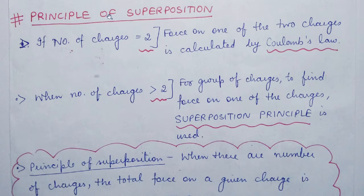when we have two charges, the force is calculated by Coulomb's law, which is F equals q1 q2 by r square. But it becomes more difficult when we have more than two charges in electrostatics - three charges, four charges, five, hundreds, or thousands of charges. This is called a group of charges, where we need to find the force on one charge due to all the other charges.